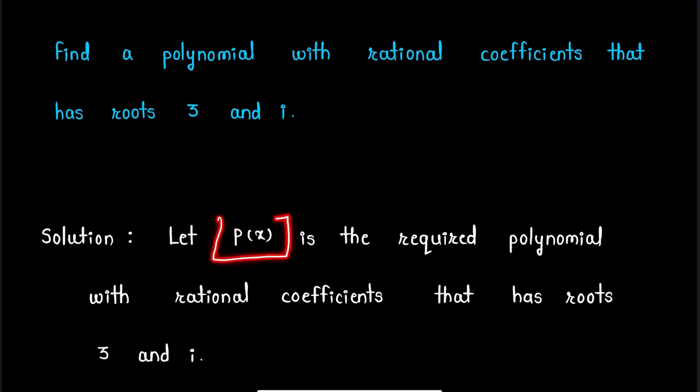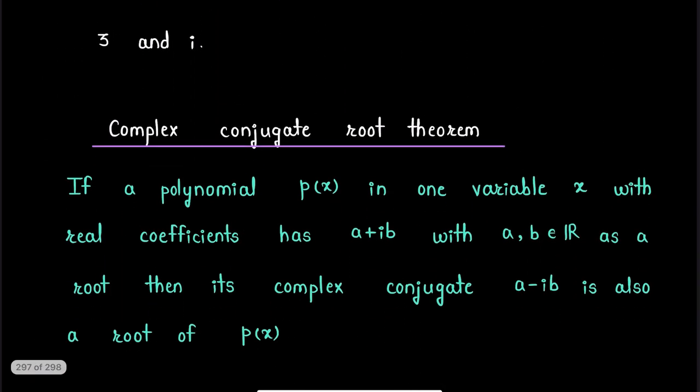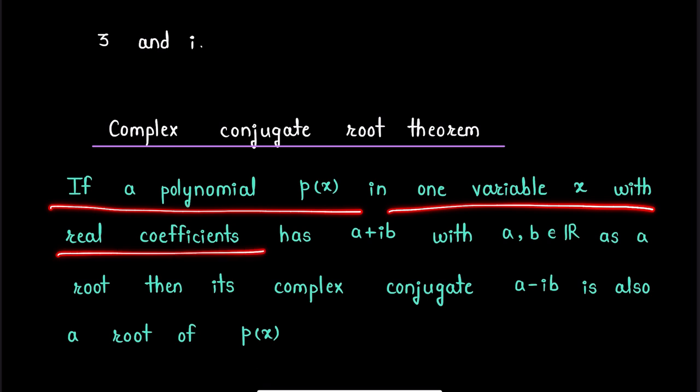Now in order to find this polynomial P(x), we are going to use this result: Complex Conjugate Root Theorem. If a polynomial P(x) in one variable x with real coefficients has a+ib with a, b ∈ ℝ as a root, then its complex conjugate a-ib is also a root of polynomial P(x).